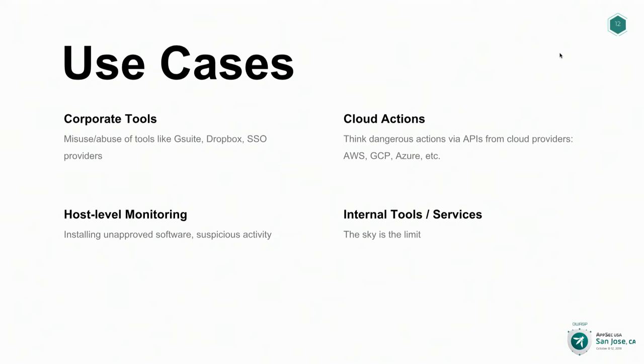Host level monitoring is more specific to the actual infrastructure. All the hosts running internally, you're going to want to watch for things that are happening on them. For example, if an employee installs Bitcoin mining on one of your internal systems, you're going to want to follow up with them and make sure that was legitimate. Finally, there's the internal tool use case. One example of a non-proprietary internal tool we use at Pinterest is Kubernetes, where there are a lot of sensitive APIs similar to cloud APIs exposed to employees, so we want alerts to verify their actions.